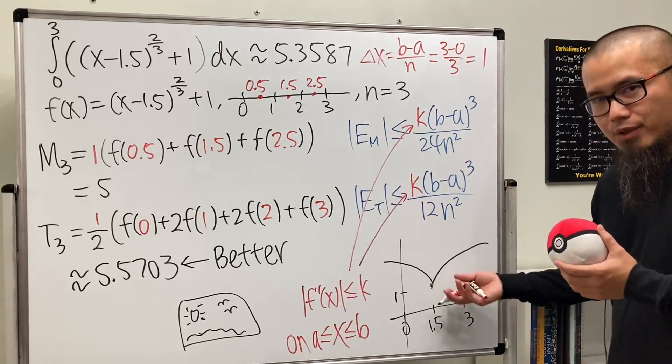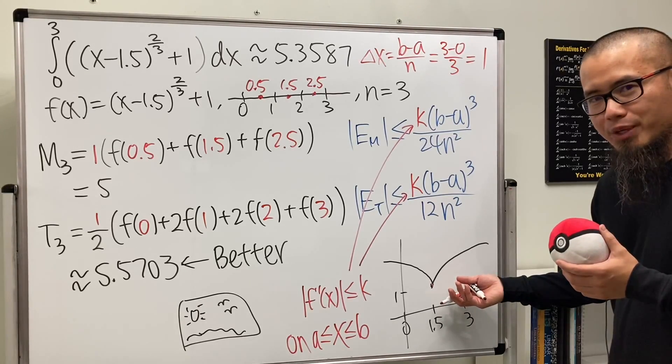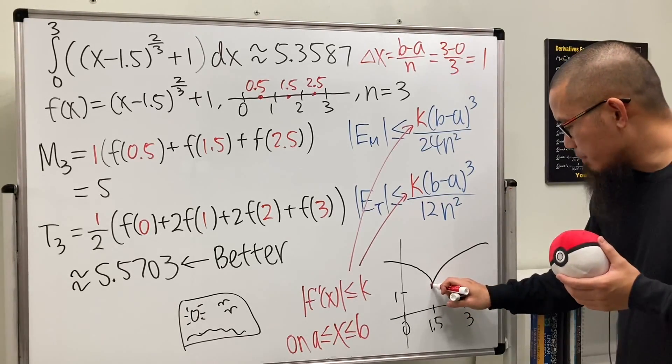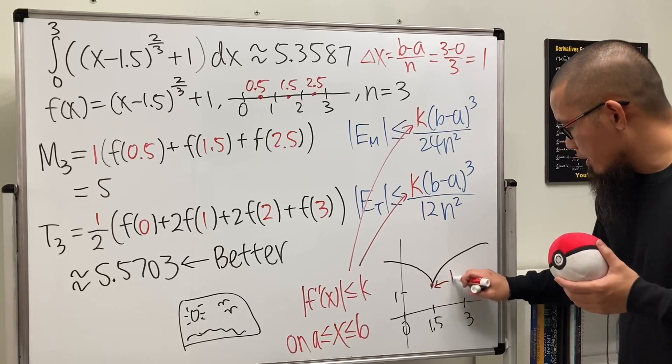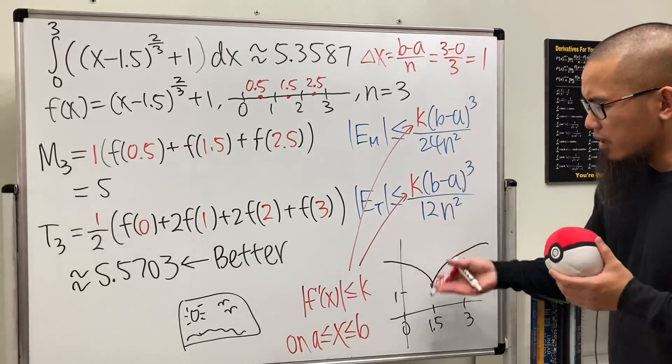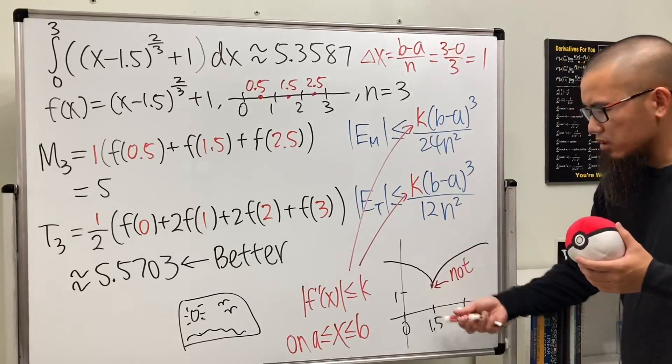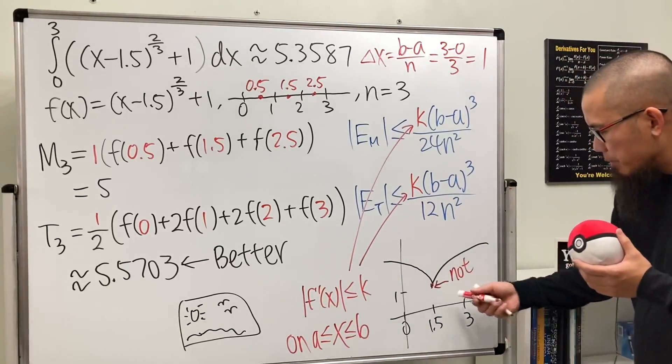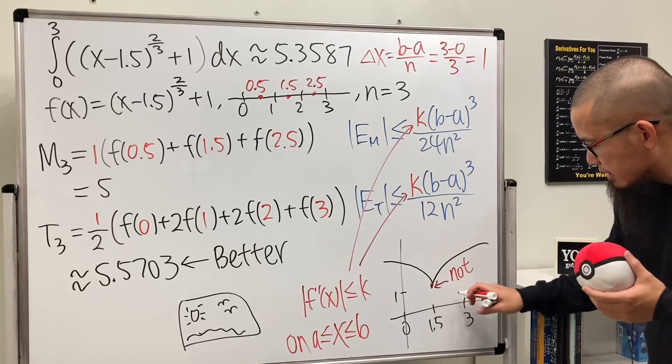What's up with this? From calculus one, we know that at this point we cannot take the derivative. If we cannot take the derivative here, don't think about the second derivative.